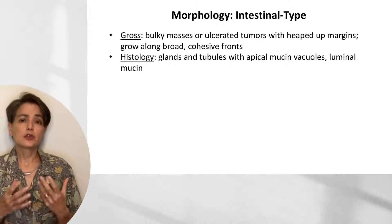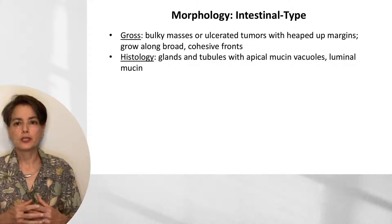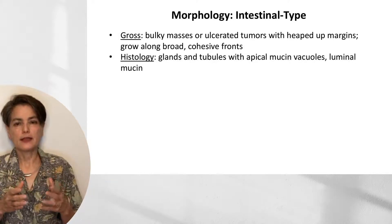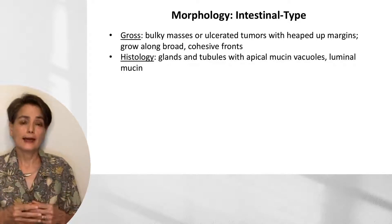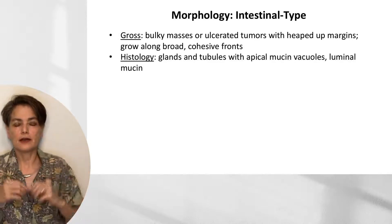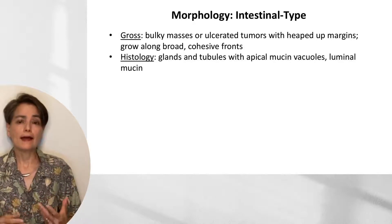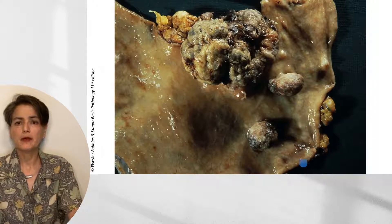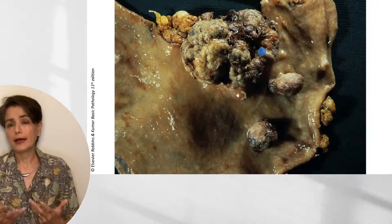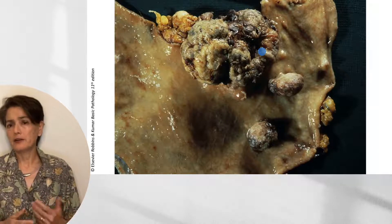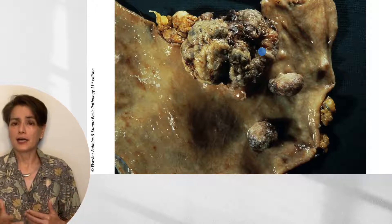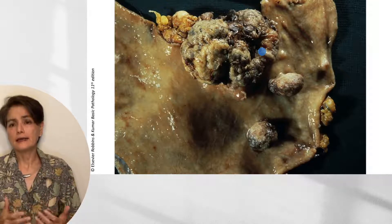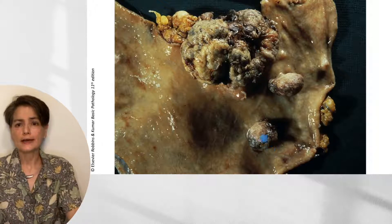Morphologically, intestinal type tumors tend to be bulky — either a mass or an ulcerated tumor with heaped-up margins — and grow along broad, cohesive fronts, in direct contrast to diffuse adenocarcinomas which invade as single cells. Microscopically, we see glands and tubules that may have apical mucin vacuoles and luminal mucin. This gross specimen shows a large tumor mass with surface ulceration — a common presentation as iron deficiency anemia from GI blood loss. Note also the two large adenomas adjacent to the tumor, from which this likely arose.